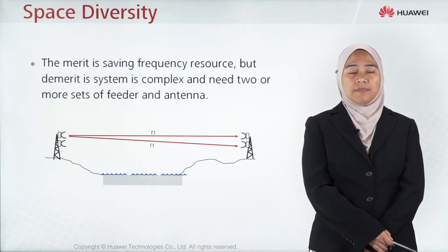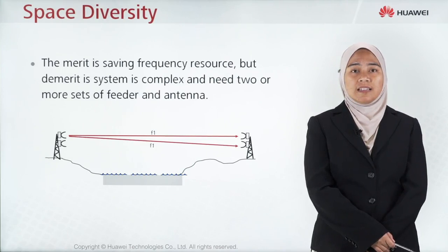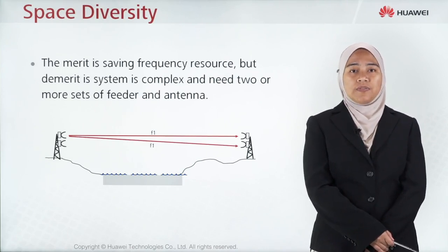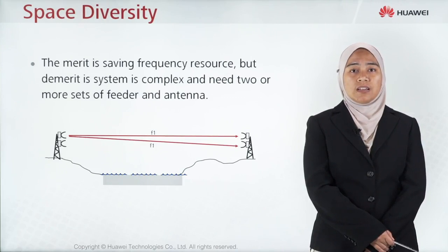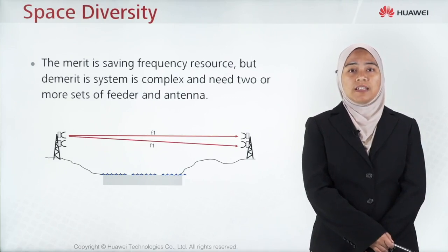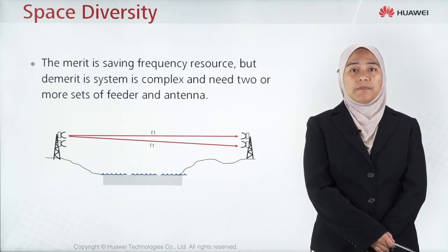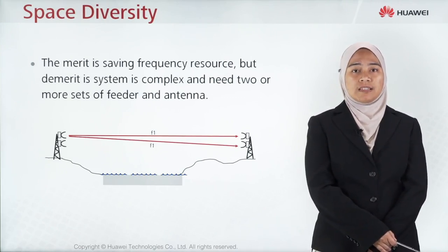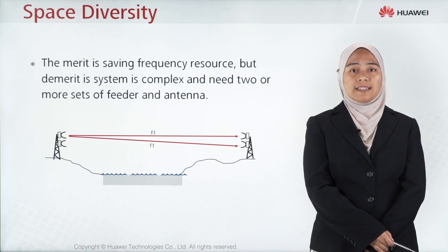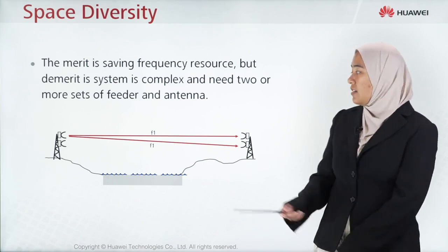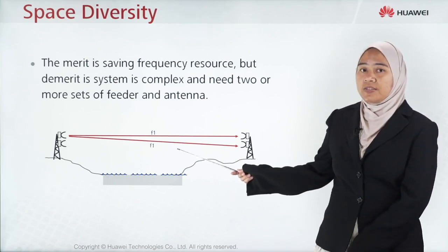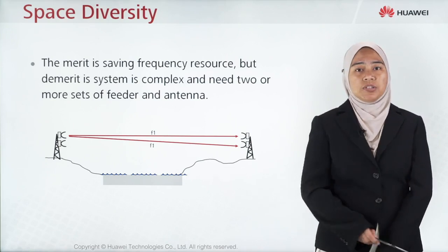Space diversity is another type of system diversity. Its merit is saving frequency resources, but the demerit is that the system is complex and requires two or more sets of feeder and antenna. Space diversity uses the same frequency, as shown in the picture.